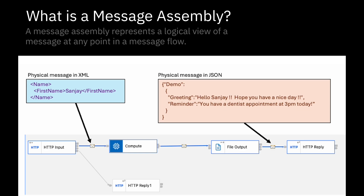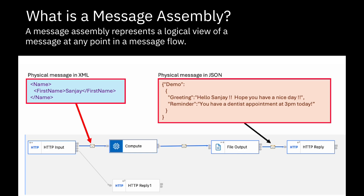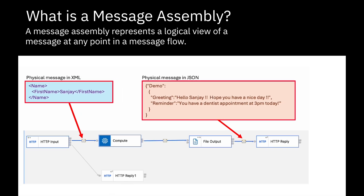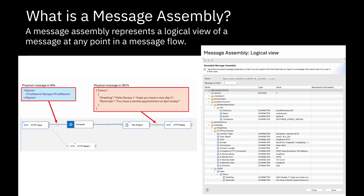A message assembly is a logical representation of a message being handled by the message flow at a particular point. The flow in the picture shows the physical XML message that was sent into the message flow and the physical JSON message that was returned. But each of these messages have a logical representation called a message assembly.